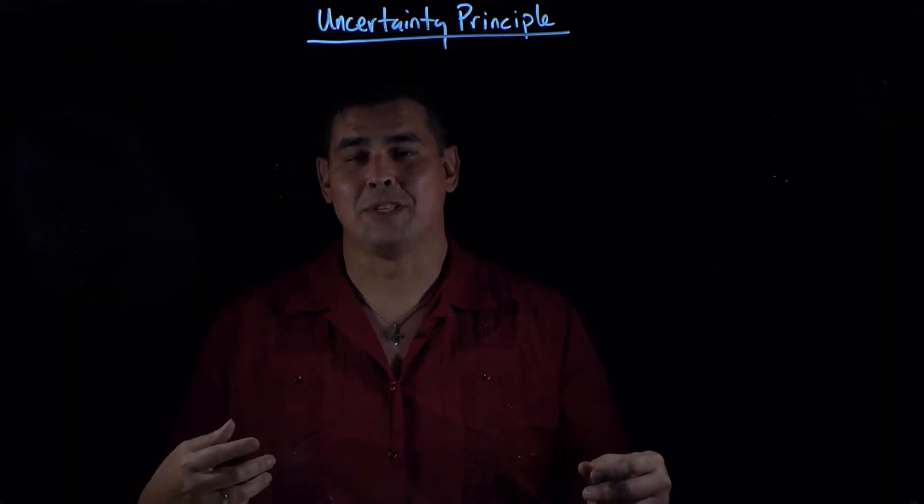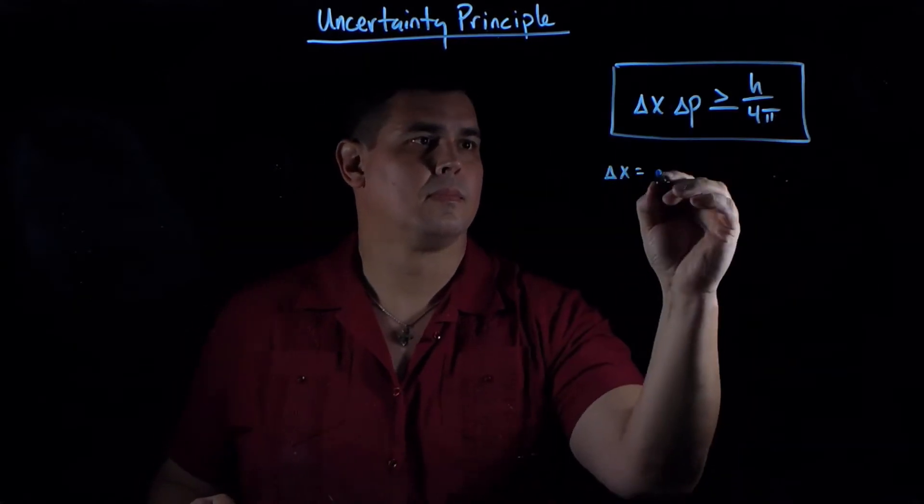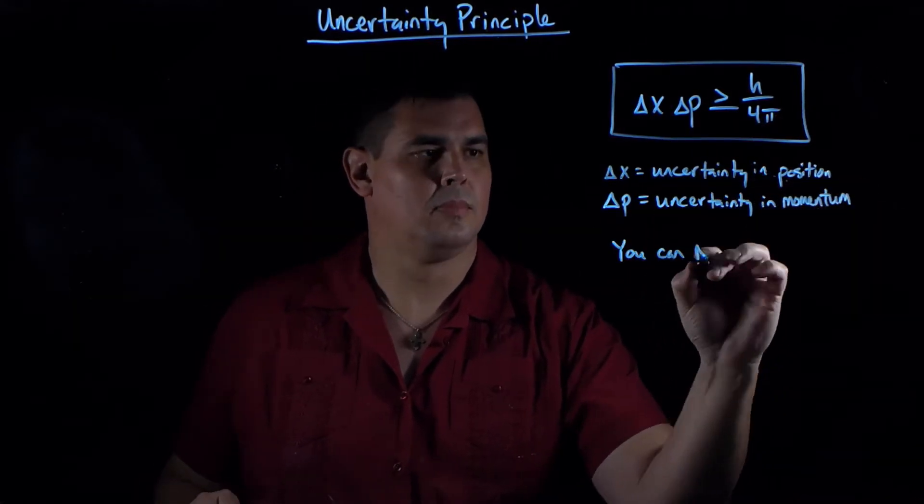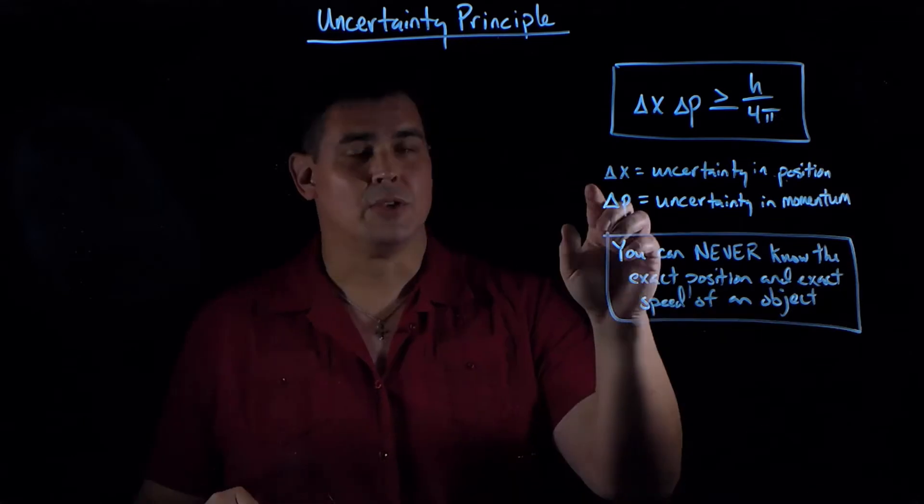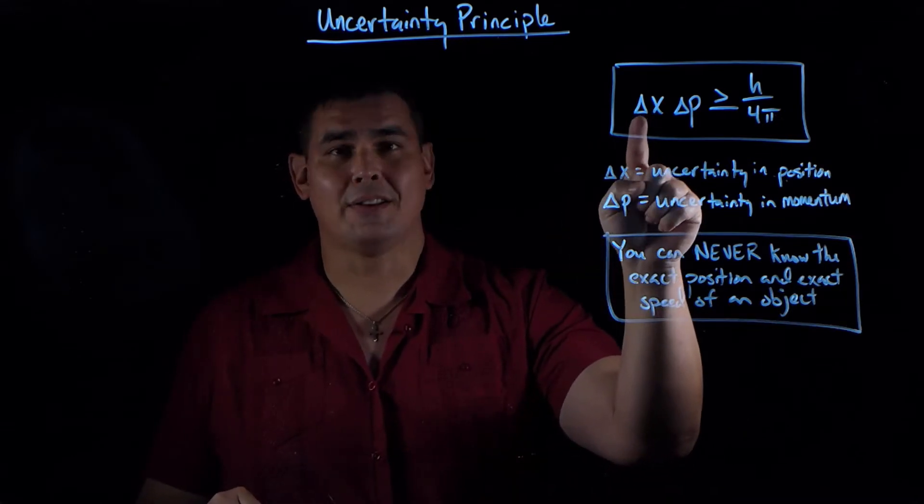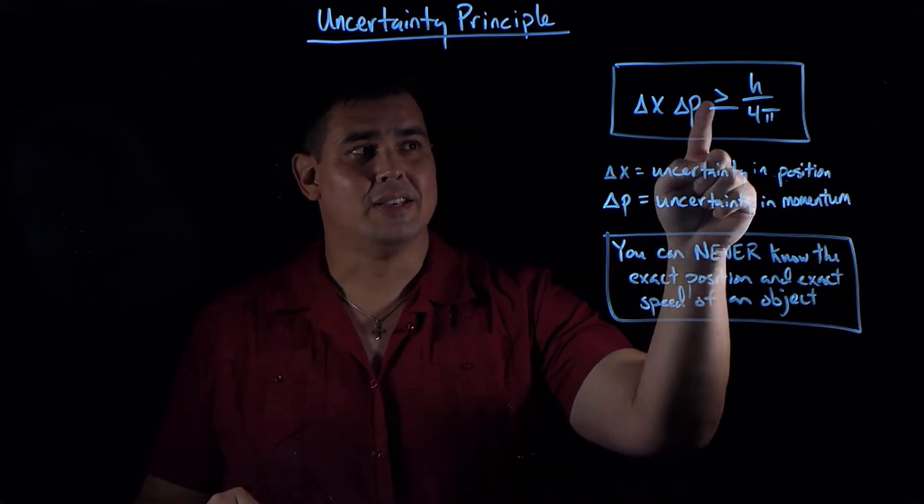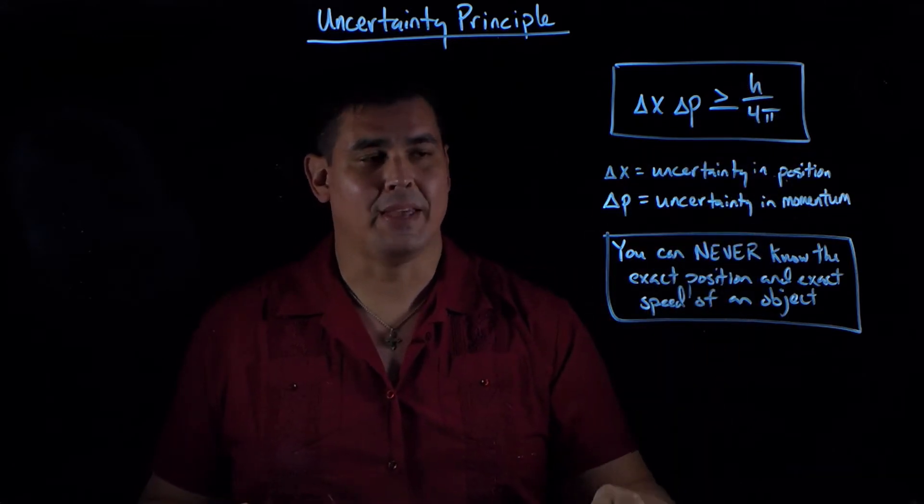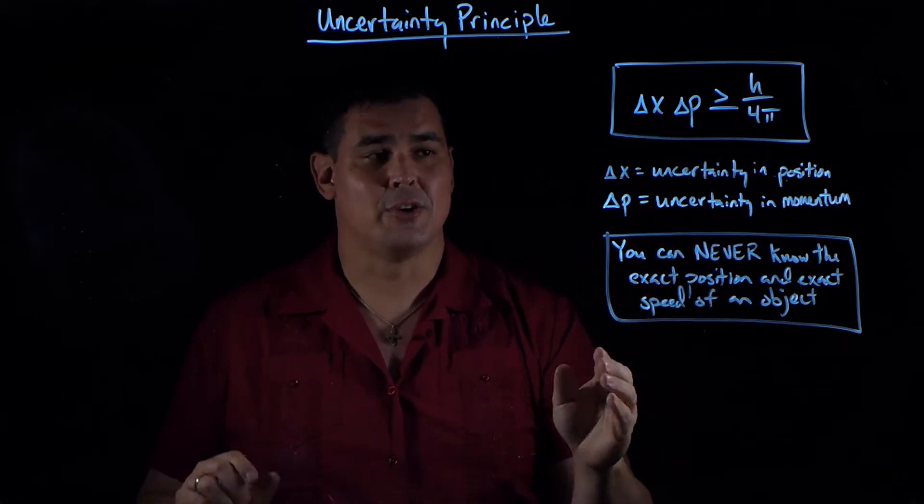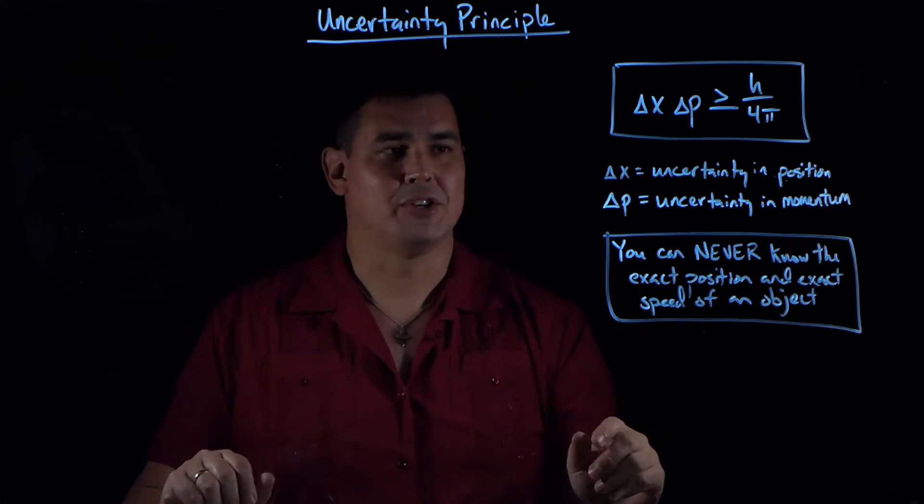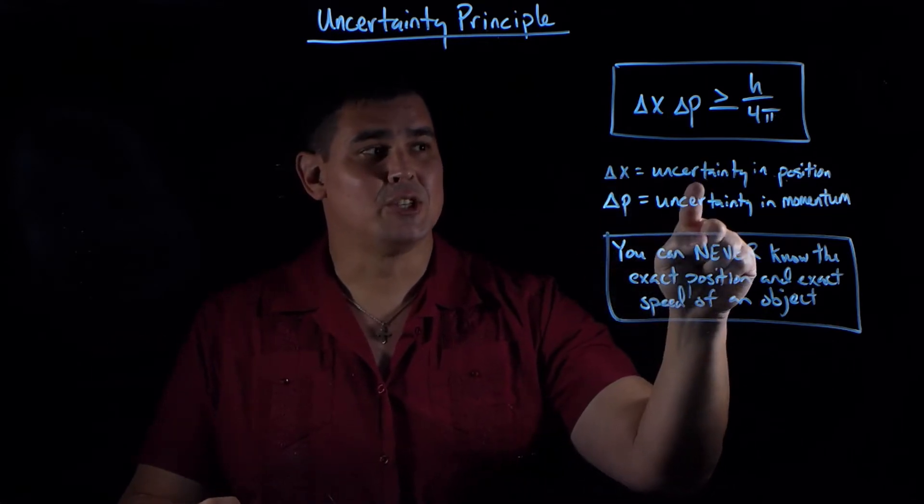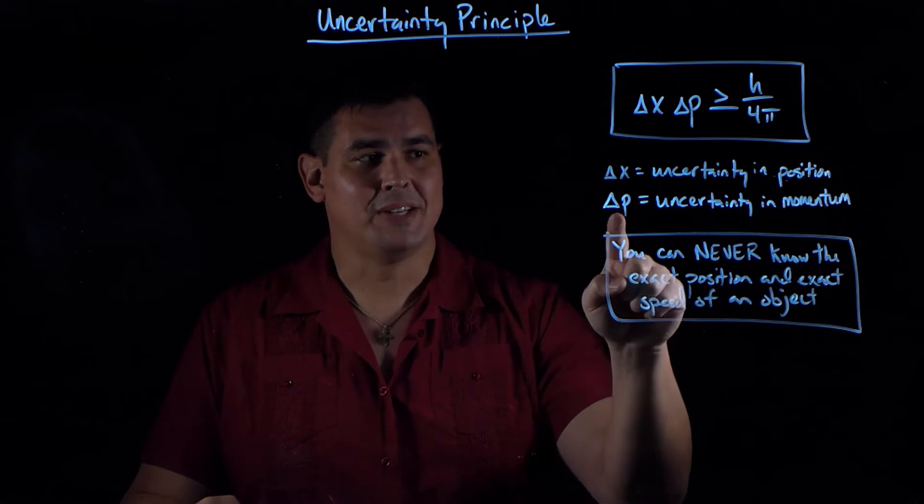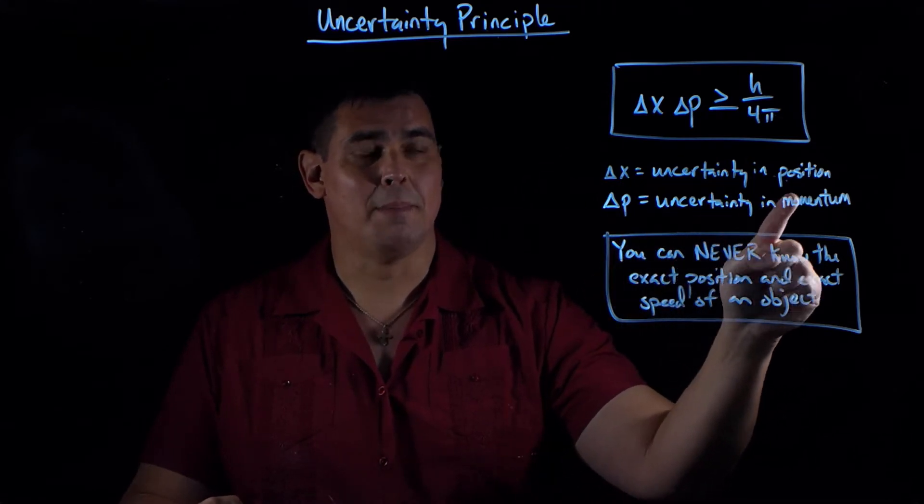So what does the uncertainty principle say? The equation looks like this: the product of delta x and delta p is greater than or equal to h over 4π, where h is Planck's constant. The delta x and delta p in this case are not what we're used to with deltas where we talked about change. Delta x is the uncertainty in the position measurement, and delta p is the uncertainty in the momentum measurement.